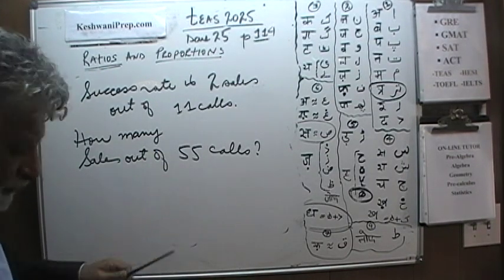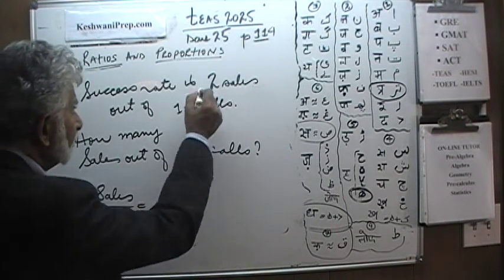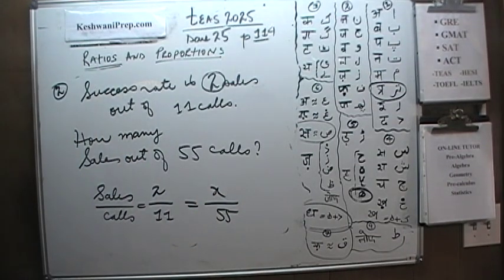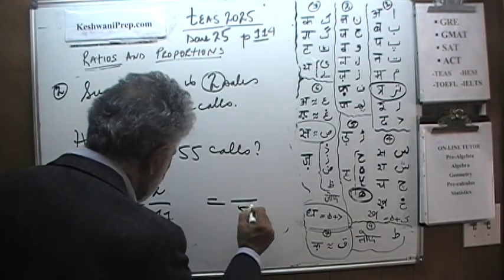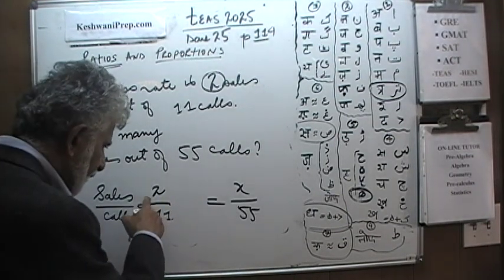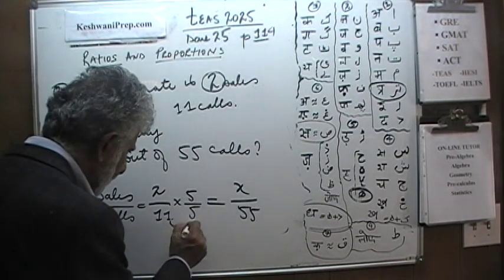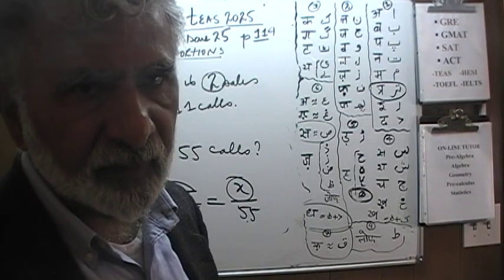We could set it up in a more formal way, like this: sales versus calls. We know that she makes 2 sales out of 11 calls. The question is if she makes 55 calls, how many sales does she make? Well, this is 55, this is 11. We need to scale it up by a factor of 5. Multiply top and bottom by 5. The question is how many sales would she make if she makes 55 calls? 55 is what multiple of 11? It's a multiple of 5. We need to take this ratio and scale it up by a factor of 5. 11 times 5 is 55 which means that she must make 10 sales, or she is likely to make 10 sales out of 55 calls.